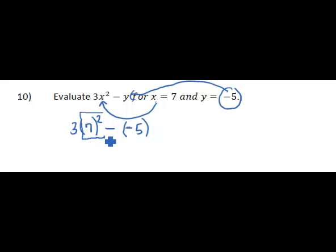The exponent, the square, applies only to the 7. So the 7 is being squared. So we have 7 times 7 is 49. So we put the 49 in place of the 7 times 7.